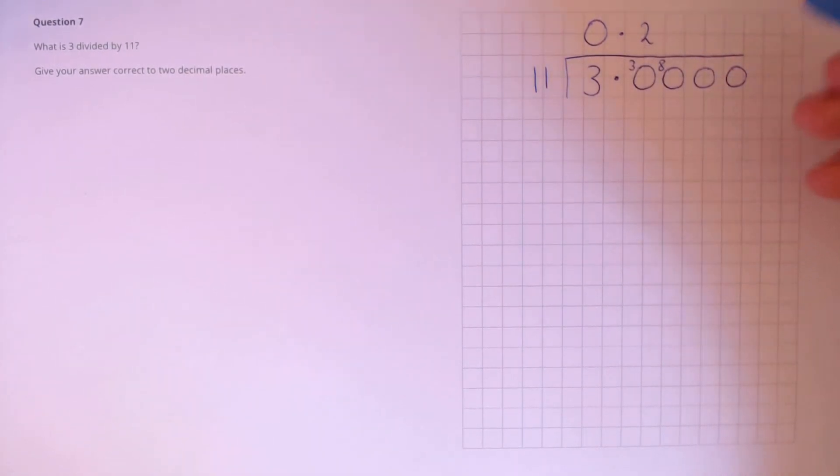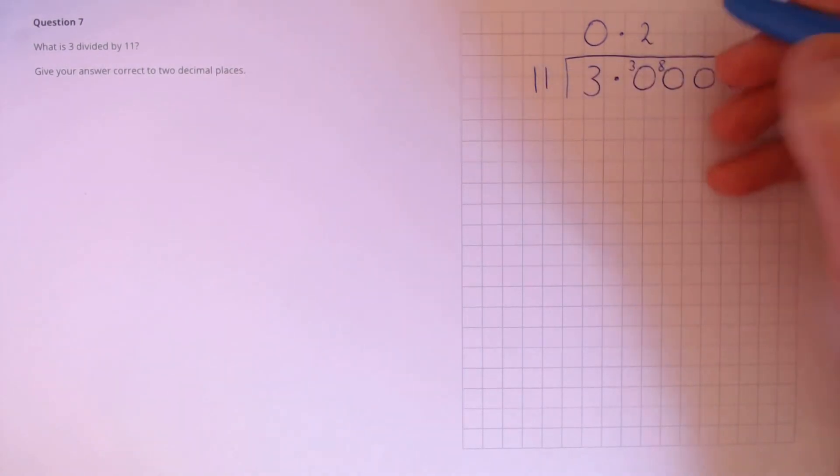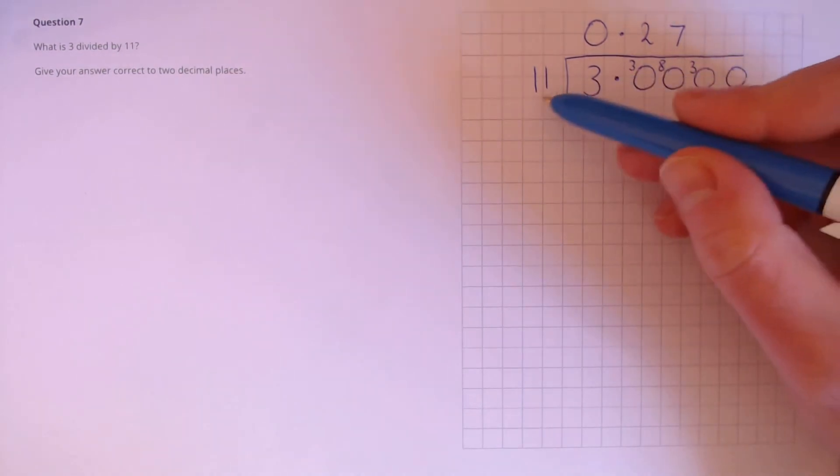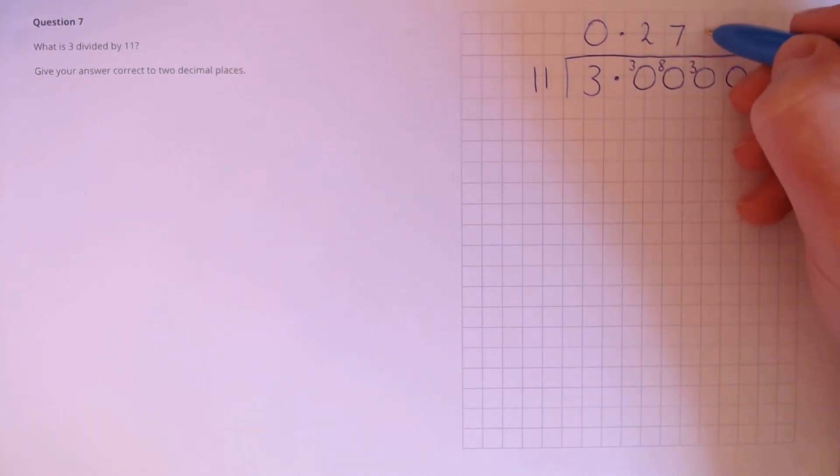80 divided by 11 is 77, with the remainder. So, 77 is 7 lots of 11, and remainder 3. We need this to two decimal places. So, we've got two decimal places so far. We just need to find this one here, just to make sure that it doesn't round up. So, 30 divided by 11, we know from before that's 2, remainder 8.